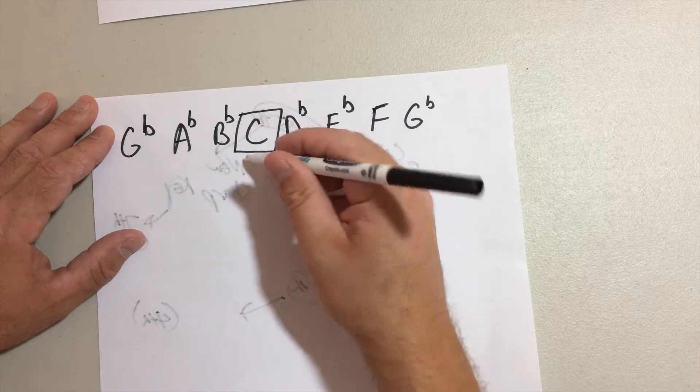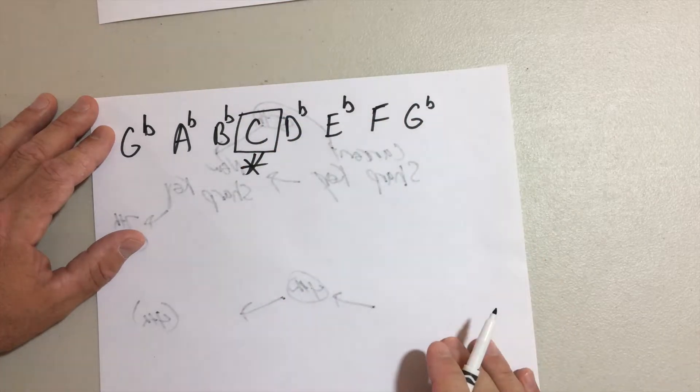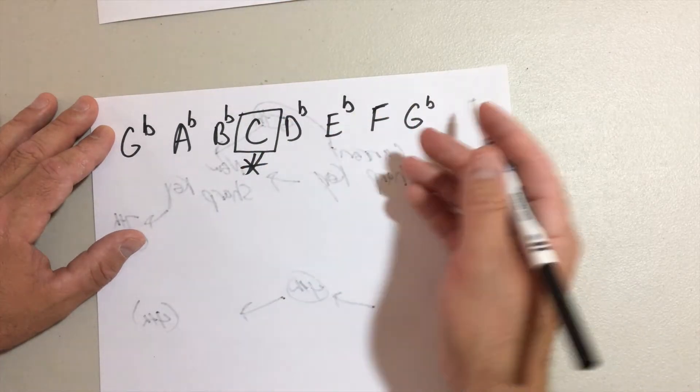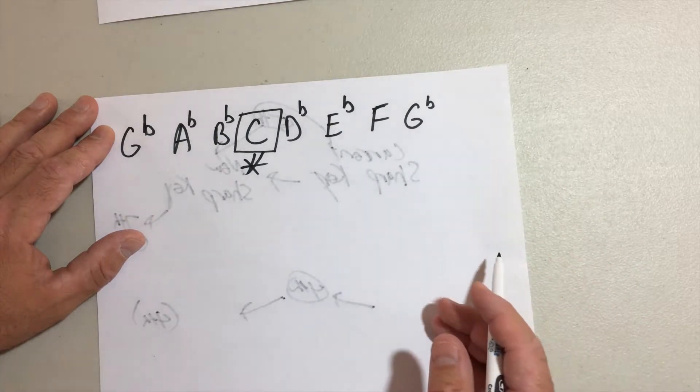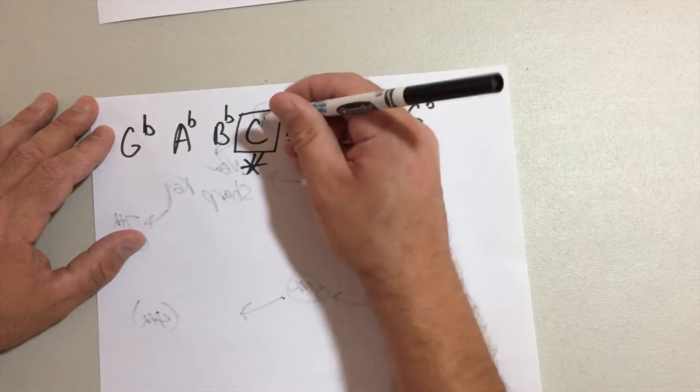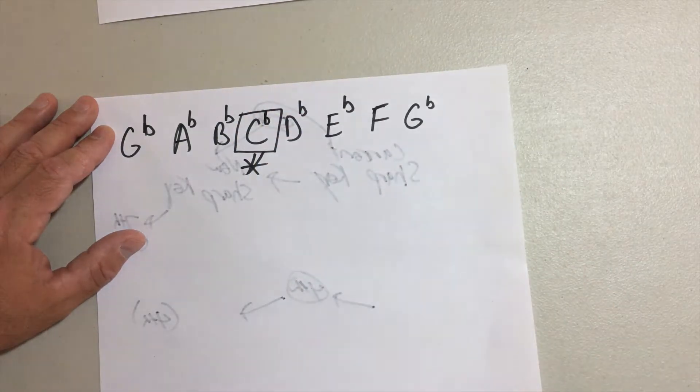The new note in our new key here is C flat. This is the four, and we said when we go to a new flat key, it's always gonna have the four become flat in that new key.